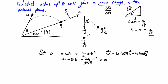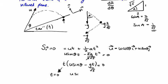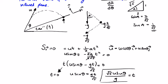Factoring out t, the twos cancel and we get: u sin θ − gt over root 5 = 0. Setting t = 0 gives the initial time, and the second solution gives us the time of flight: t = root 5 · u sin θ over g.